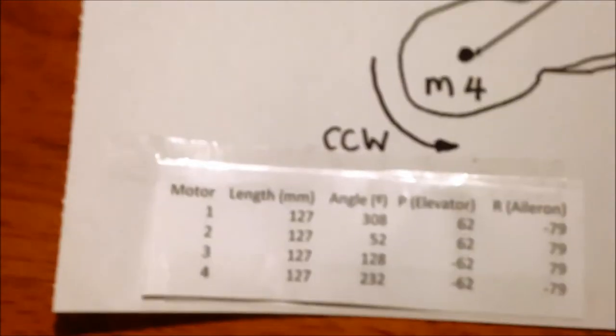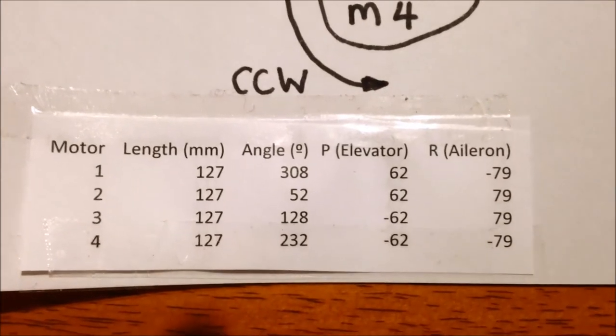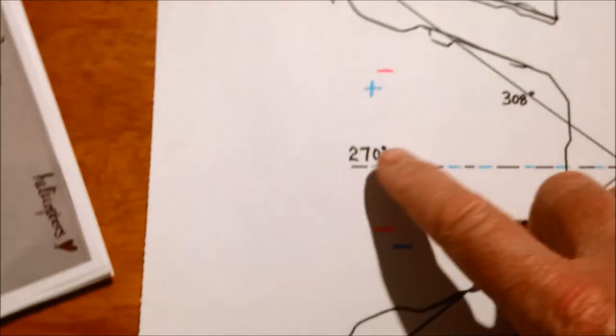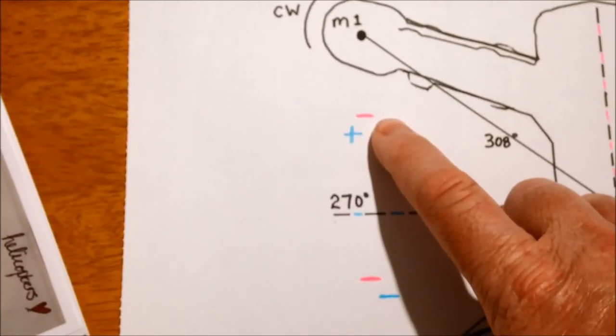So as you can see here, 308 motor 1 gives you 62, 62, and minus 79 elevator aileron, which is positive for your elevator, minus for your aileron.